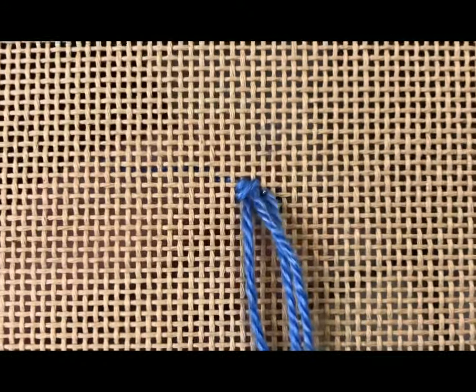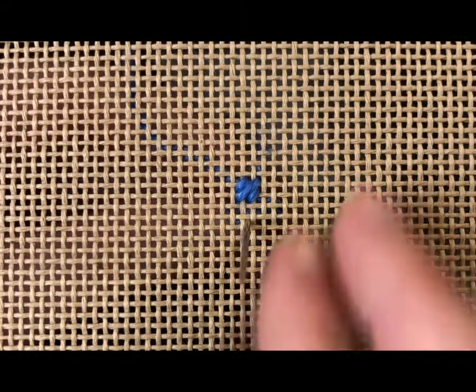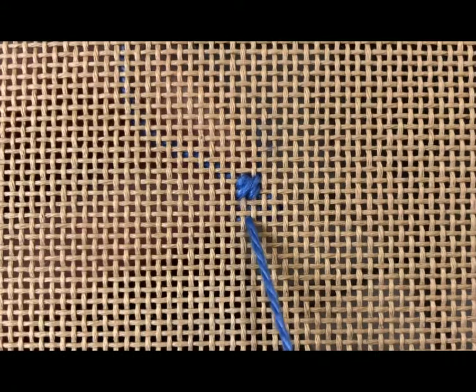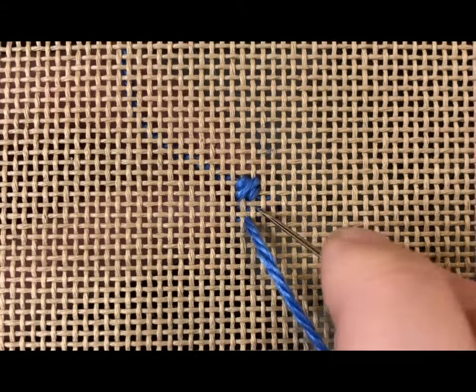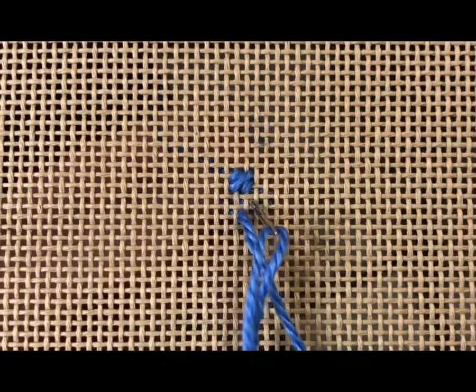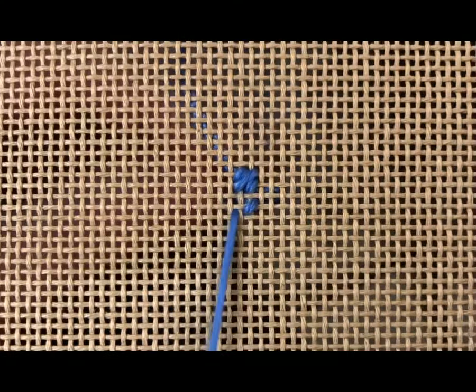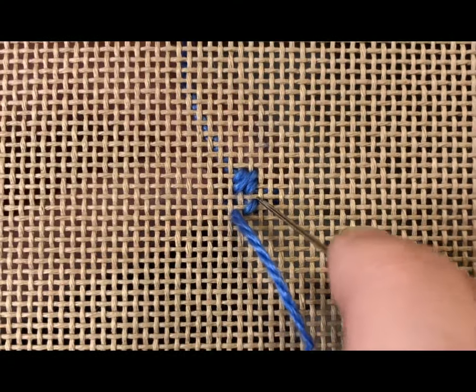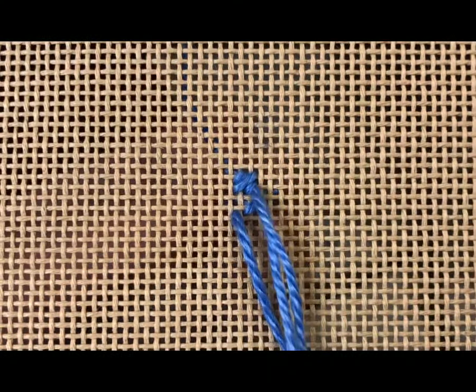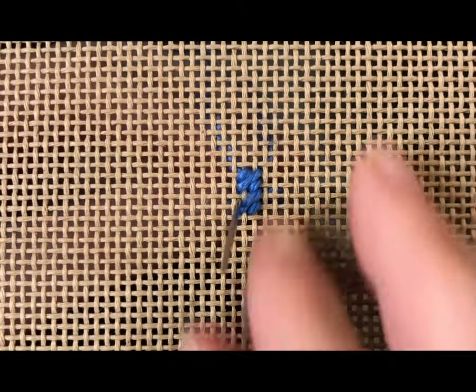Now I'll be working the stitches diagonally so for my rows that will trend upward I will drop down two holes to start my second stitch. So I'll start with my tent stitch, followed by a long stitch that begins directly next to my tent stitch, and finish that stitch with a tent stitch.